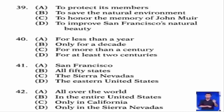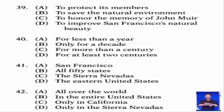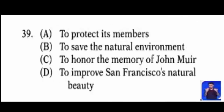Today the Sierra Club boasts almost 200,000 members in all 50 states of the United States. Through activities such as conferences, lectures, exhibits, and films, the organization works to continue the effort begun by John Muir. The Sierra Club also publishes a weekly newsletter, a bi-monthly magazine, and various books. Number 39: What is the main objective of the Sierra Club?